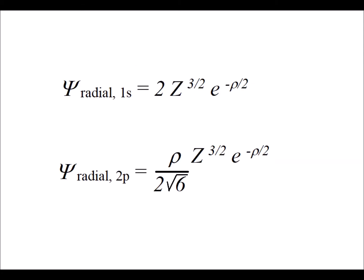In particular, we're going to look at two types of orbitals: the 1s orbital that we find in hydrogen, and then the 2p orbital that we see in carbon. Here we have the expressions for just the radial part of their orbital wave functions.